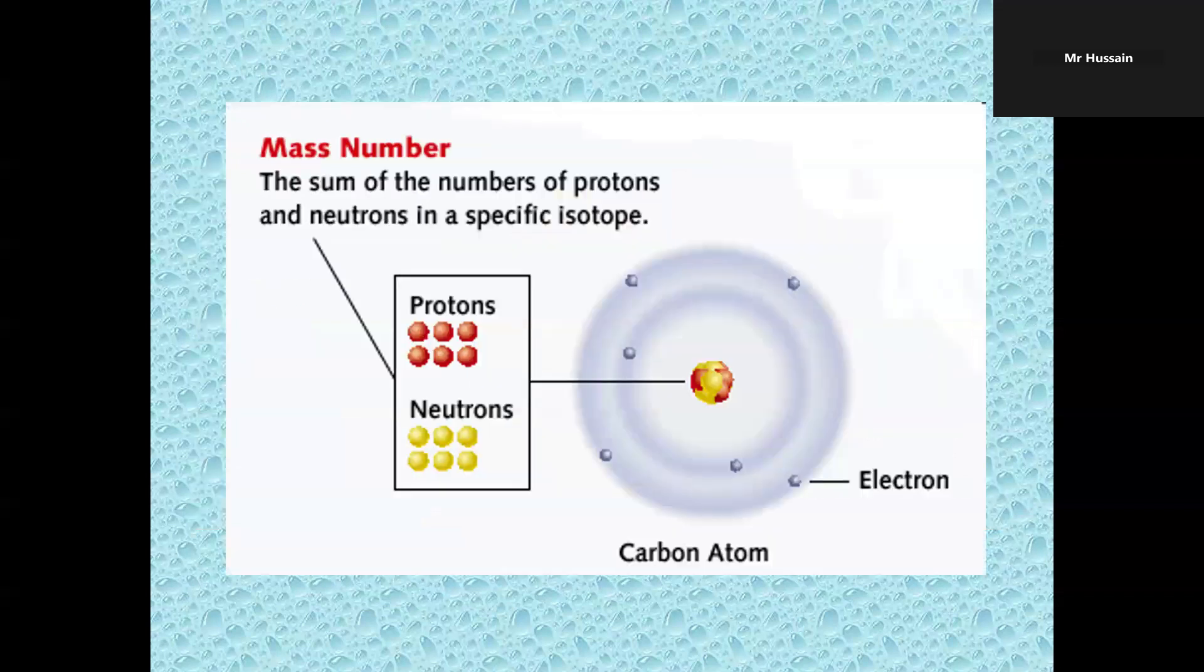What's mass number? The sum of the numbers of protons and neutrons in a specific isotope. This diagram shows number of protons, number of neutrons, the electrons, and the nucleus of a carbon atom.